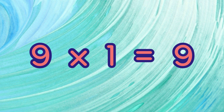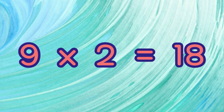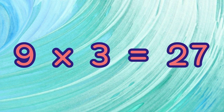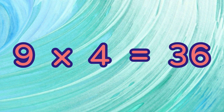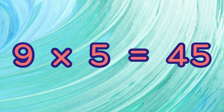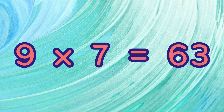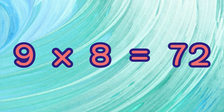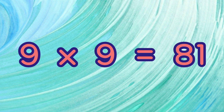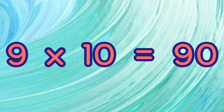9 x 1 equals 9. 9 x 2 equals 18. 9 x 3 equals 27. 9 x 4 equals 36. 9 x 5 equals 45. 9 x 6 equals 54. 9 x 7 equals 63. 9 x 8 equals 72. 9 x 9 equals 81. 9 x 10 equals 90.